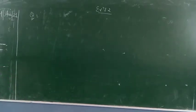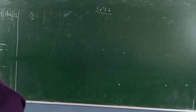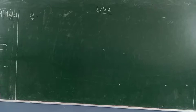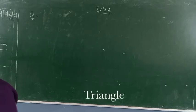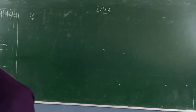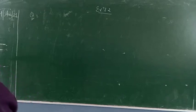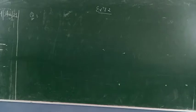Question number 1 says: in an isosceles triangle ABC with AB equals AC, the bisectors of angle B and angle C intersect each other at point O. Join A to O. Show that OB equals OC. So for that, first you need to draw the diagram.